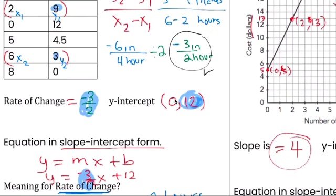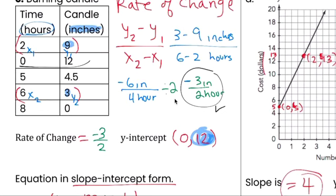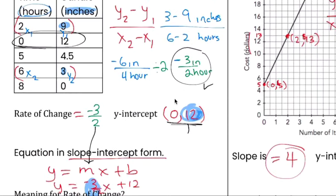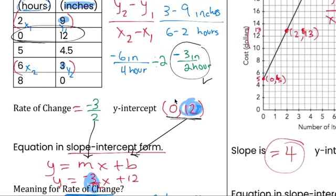The y-intercept, anything that starts with zero, right here is (0,12), right there. And then the slope is this, and the y-intercept, slope and rate of change is 12.